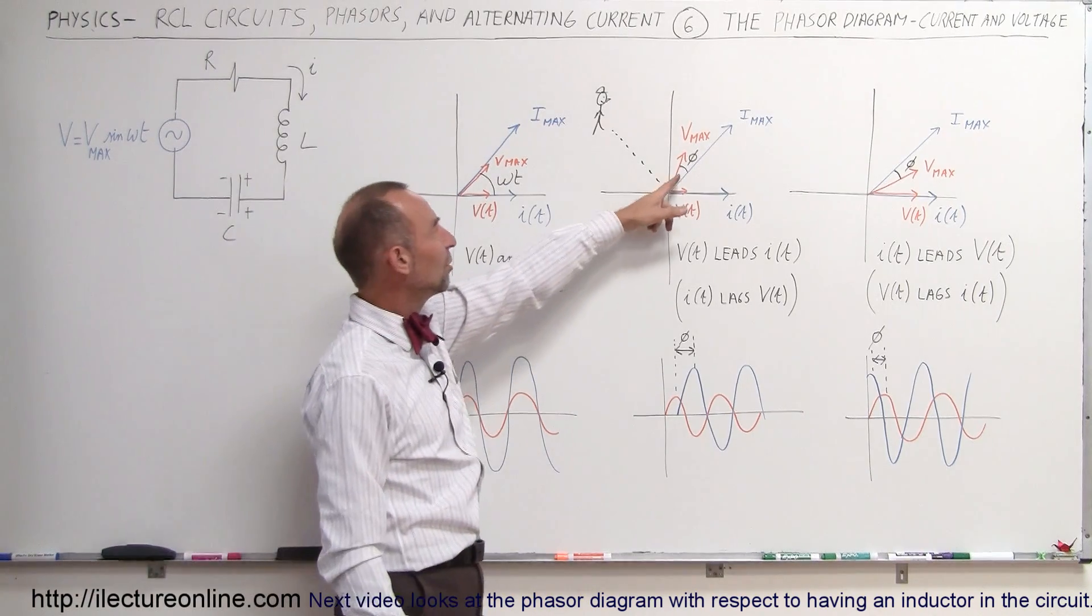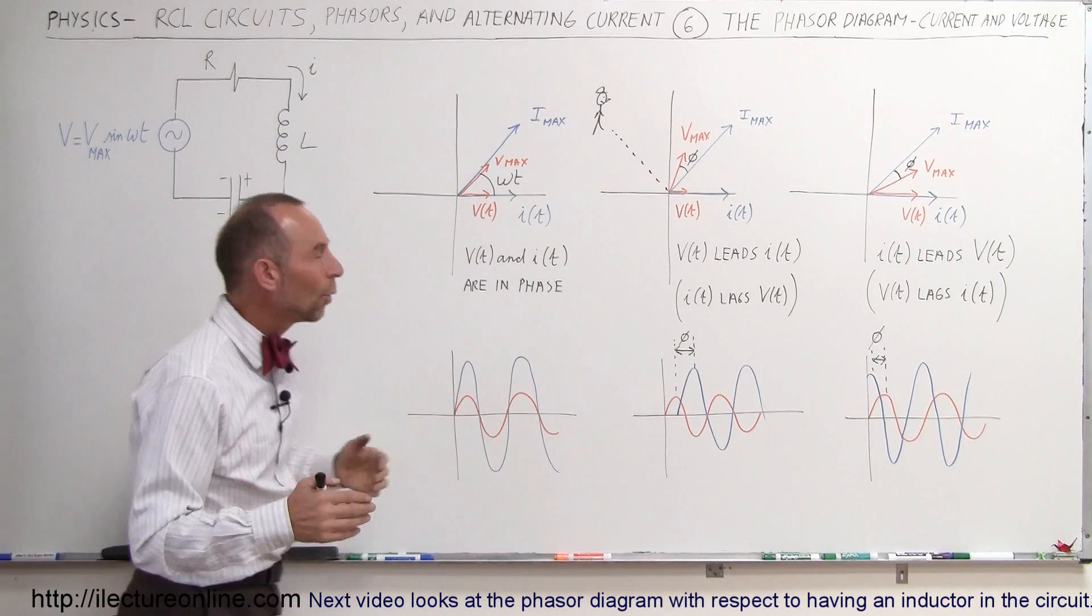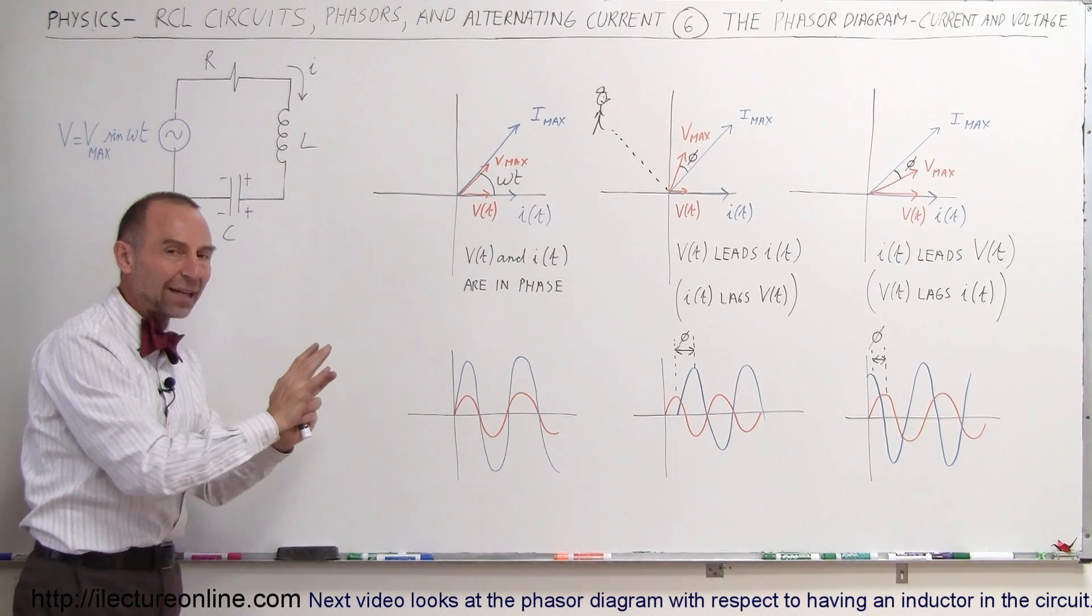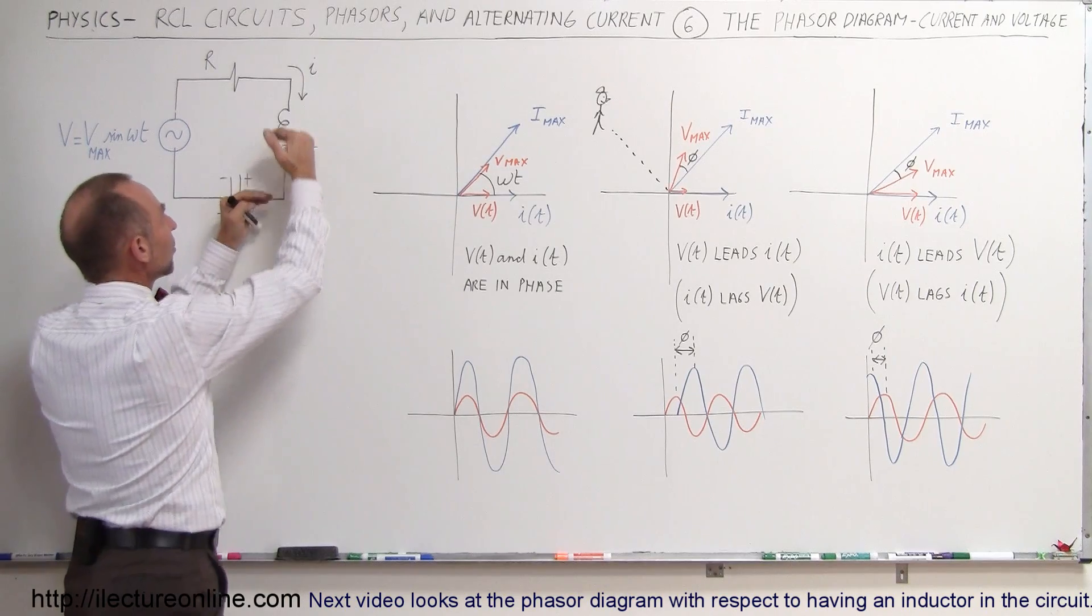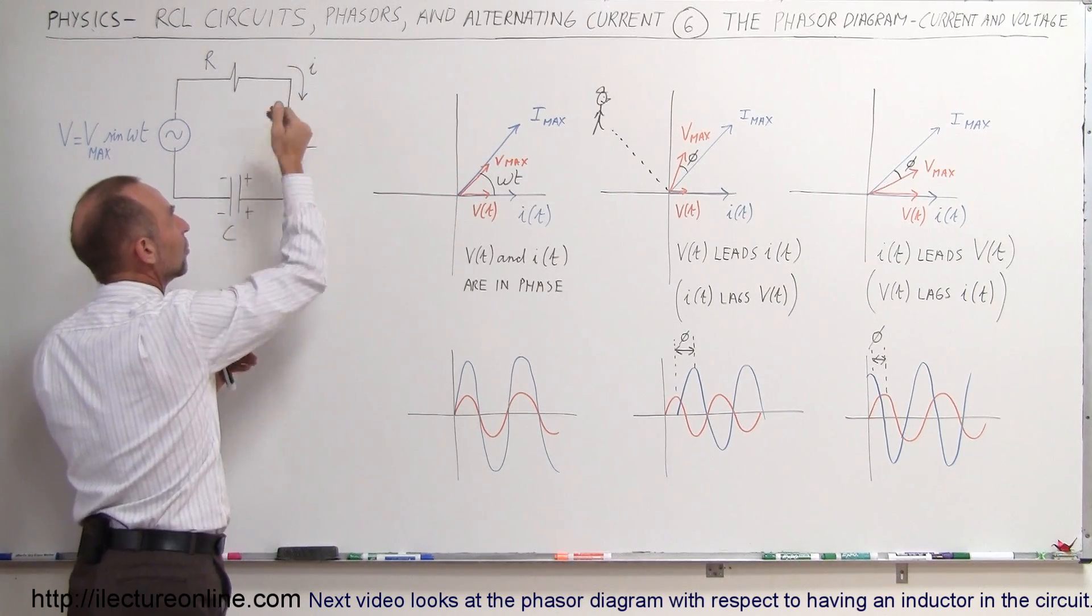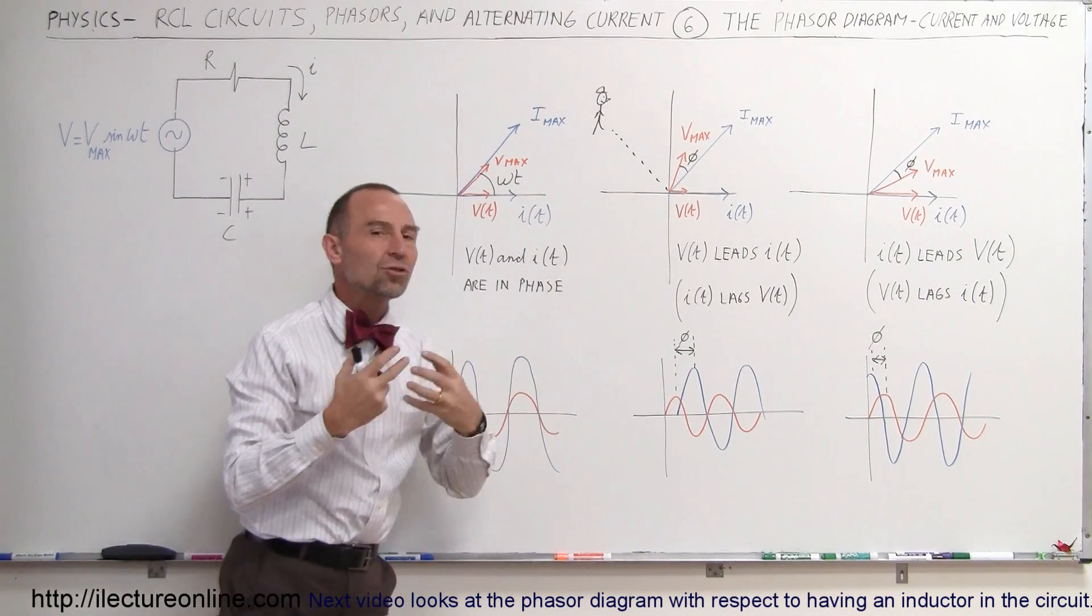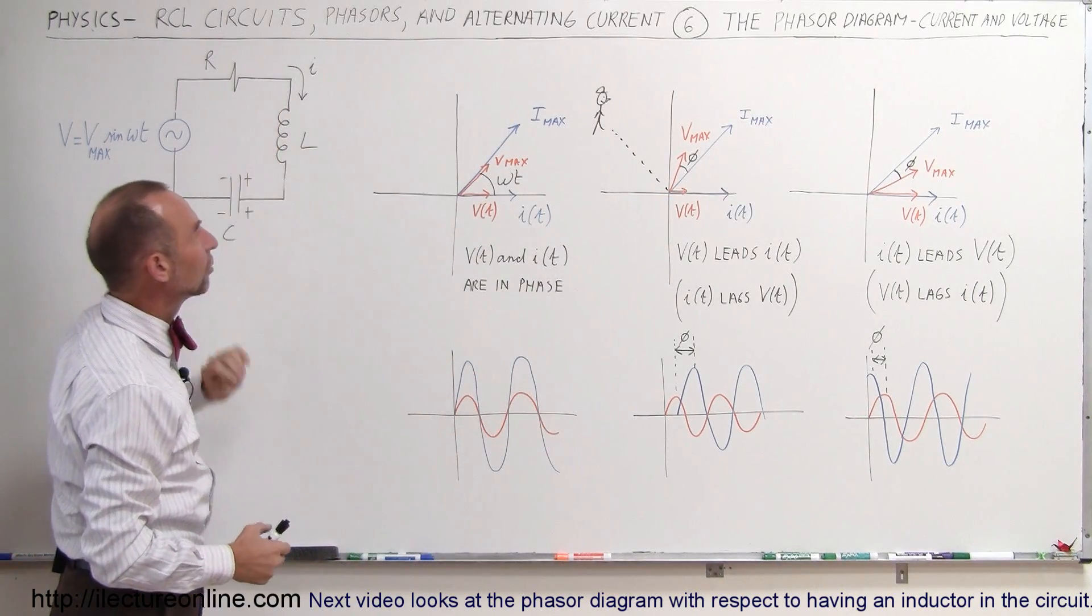Okay, we have a situation where the voltage leads the current. What's happening in the circuit? Well, we know that the inductor holds back the current, and so the voltage builds up across the inductor before the current builds up across the inductor, so we know that in a circuit like this, the inductor plays a predominant role in the circuit.